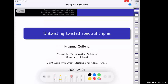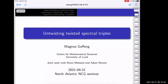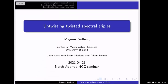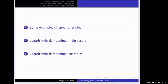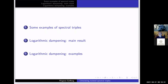So — oh, this is not how I wanted this to work out — I can't use that for that, and I can't use that for that either. Here we go. So this is a plan for the talk: I'm going to give some examples first of spectral triples just to sort of set the stage and exemplify what we want to do. Then I'll talk about this thing that we call logarithmic dampening, which is how we untwist twisted spectral triples. Then I'll give some more examples at the end.